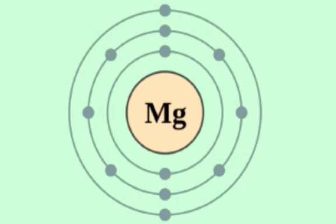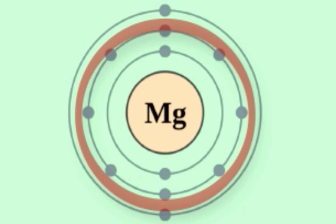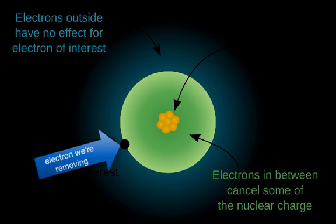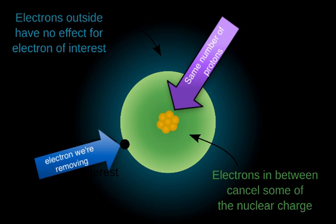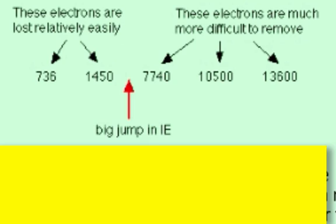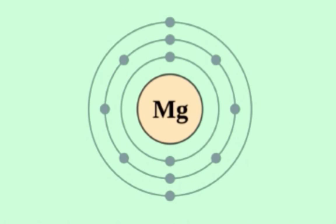After removing those two outer electrons, we're then going to an inner shell of electrons. Considering the three factors: we're closer to the nucleus in an inner shell; there's less shielding from inner electrons; and the nuclear charge remains the same — we haven't removed any protons. So pulling an electron away from a nucleus where the net nuclear charge isn't reduced by shielding and where it's closer to the nucleus obviously takes more energy. This gives us evidence that we're jumping from an outer shell to an inner shell — evidence for the shell structure of an atom.